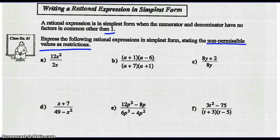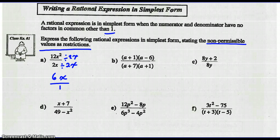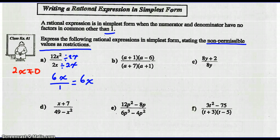With 12x squared over 2x, we can divide both terms by 2x. 12x squared divided by 2x is 6x, and 2x divided by 2x is 1. So we're left with 6x. To state the non-permissible values, our denominator 2x cannot equal 0. Divide both sides by 2, so x cannot equal 0. That's our restriction.